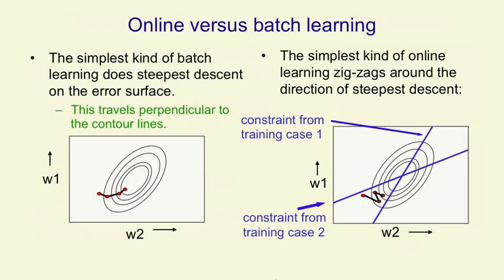So in the picture on the right, there are two training cases. To get the first training case correct, we must lie on one of those blue lines. And to get the second training case correct, the two weights must lie on the other blue line. So if we start at one of those red points and we compute the gradient on the first training case, the delta rule will move us perpendicularly towards that line.